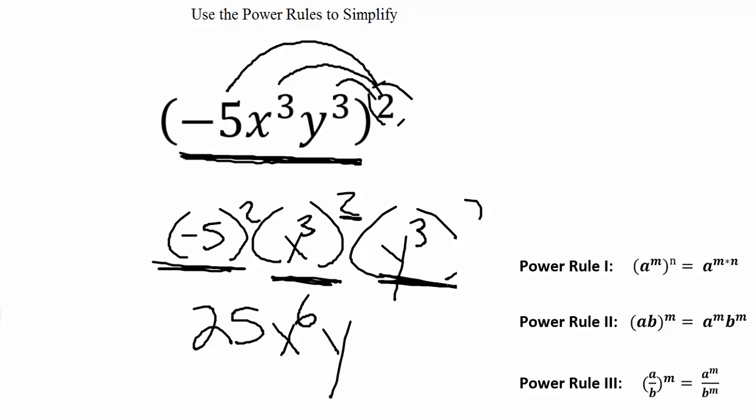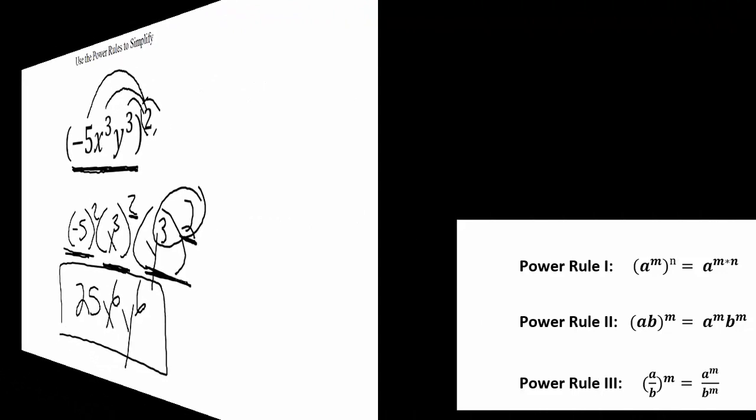Drop down the y, and again, 3 times 2 gives us 6. Our simplified answer is 25x⁶y⁶.